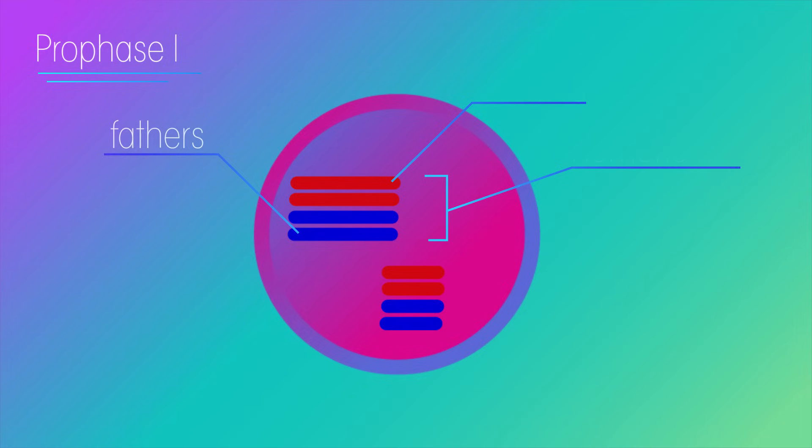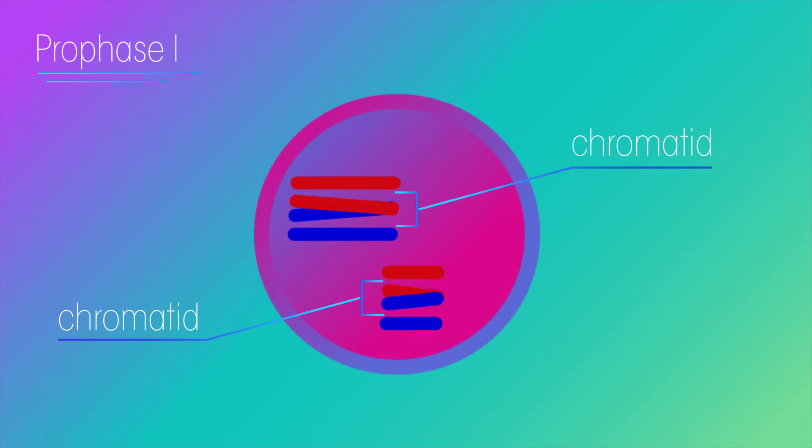What happens next is vital for successful meiosis. As each chromosome is lined up next to its partner's pair, one chromatid from each side gets entangled with a corresponding chromatid from the other side. This is called crossing over.